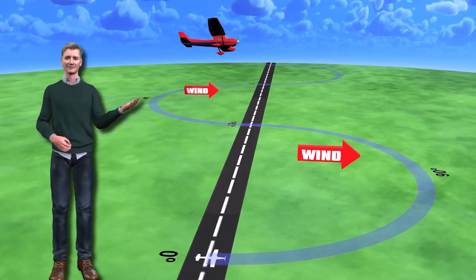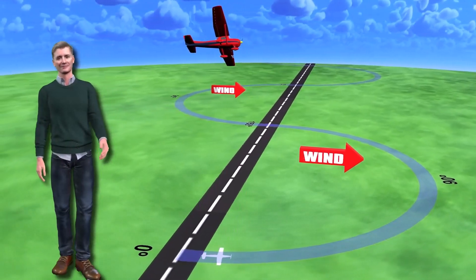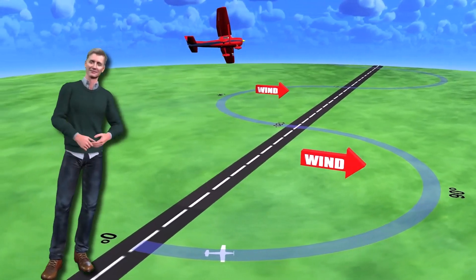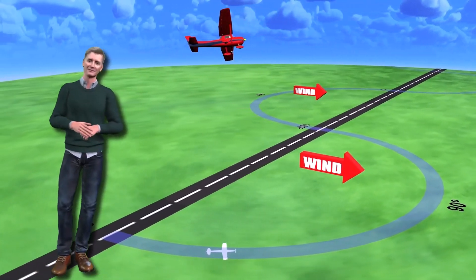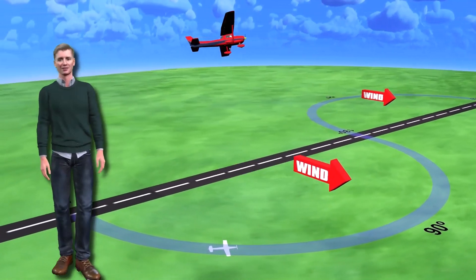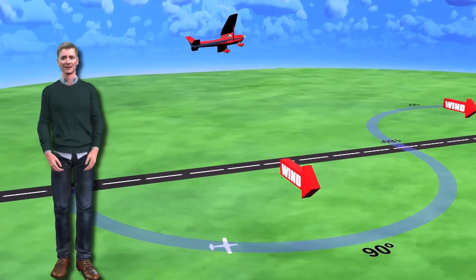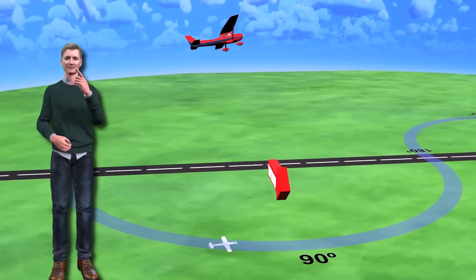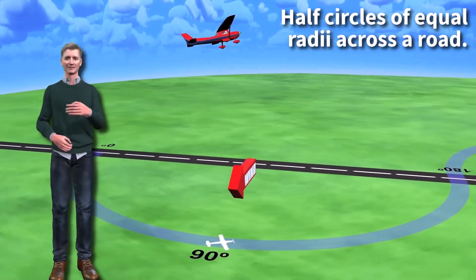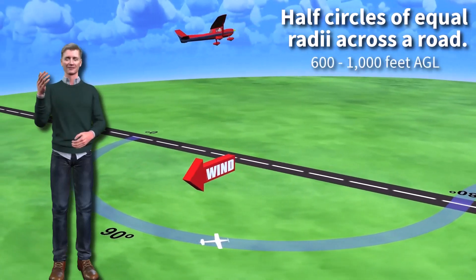Now we come to a ground reference maneuver that's essentially a turn around a point on a half shell, or two. It's the same maneuver, but sliced in half and set side by side. The physical objective of this maneuver is to fly half circles of equal radii along a straight ground reference, such as a road, fence, or field border, at 600 to 1,000 feet above ground level.